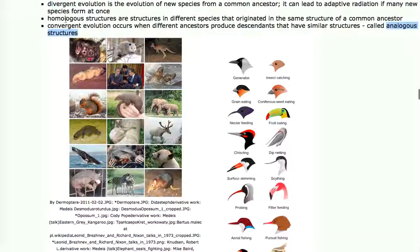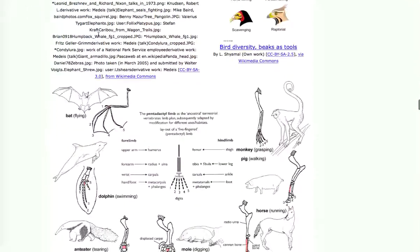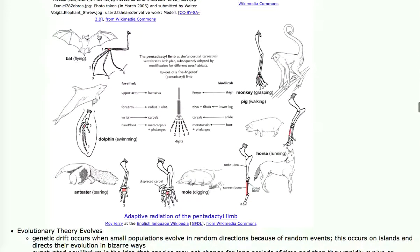Homologous structures are structures that evolved from the same ancestor in different environments by adaptive radiation. Analogous structures come about by convergent evolution of different species from different ancestors evolving to look similar because of similar environmental conditions.